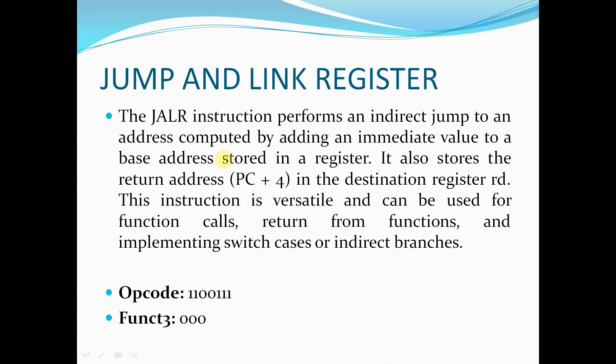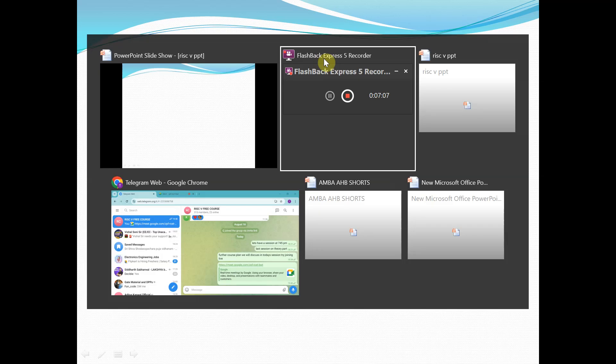That's all for today's session. We have covered the Jump and Link (JAL) and Jump and Link Register (JALR) instructions in RISC-V. With this session, we have completed all the types of instructions in the RISC-V base ISA 32-bit. In the upcoming sessions, we are going to start with Verilog coding, taking reference from this 32-bit RISC-V base ISA. Thank you.